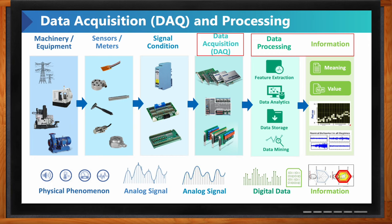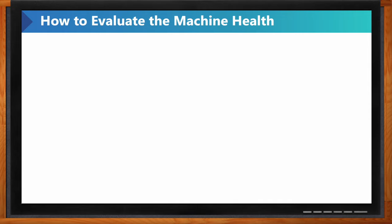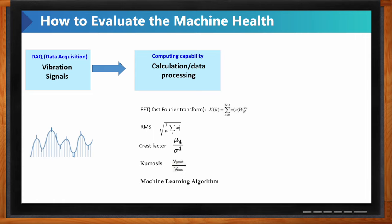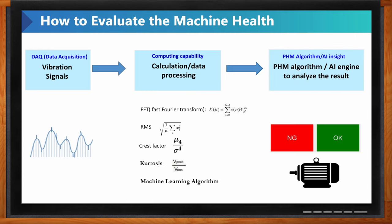The data acquisition system acquires vibration signals, and the next step — if you want to evaluate your machine health — requires computing and calculation. Data processing makes decisions based on the data trend or data values you have. These are the key things you will need to evaluate machine health.